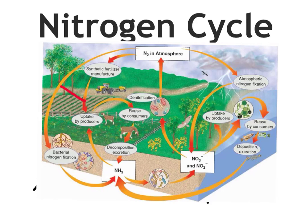Another way that nitrogen leaves the atmosphere is a process called bacterial nitrogen fixation. There's bacteria that lives on the roots of plants that's capable of breaking down the nitrogen that's in the atmosphere. They then make that nitrogen available to plants. So things like soybeans and legumes are capable of breaking down the nitrogen that's in the atmosphere.